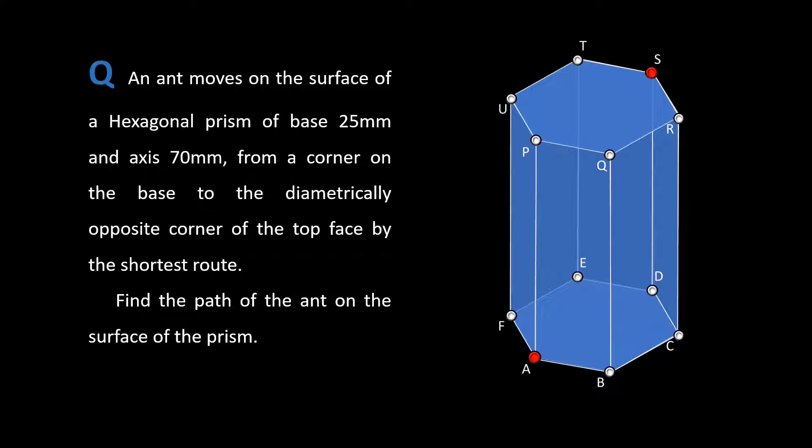Let's take a hexagonal prism. Bottom face: A, B, C, D, E and F. Top face: P, Q, R, S, T and U.